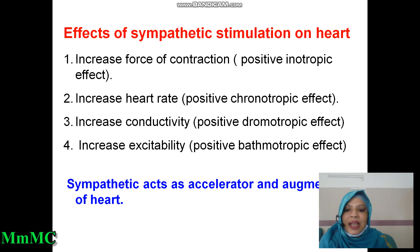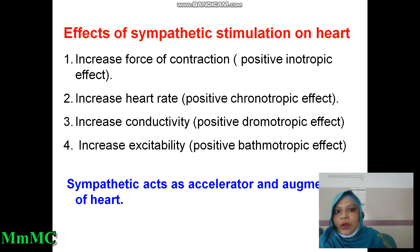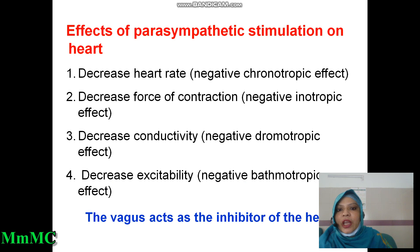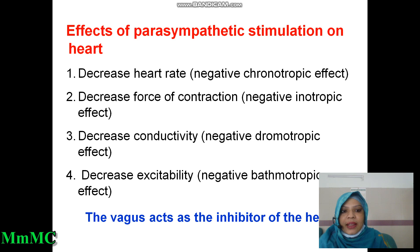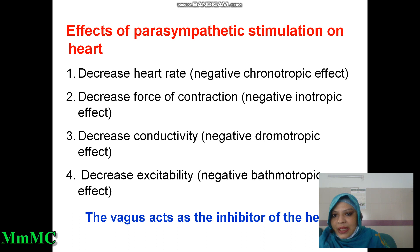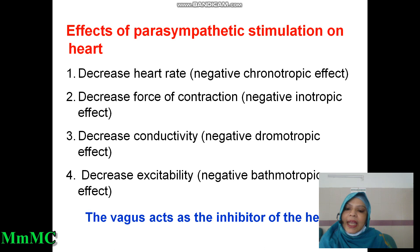Sympathetic nerves have a cardio-accelerator and augmentation effect on the heart. The effects of parasympathetic stimulation, acting through the vagus nerve and releasing acetylcholine, include: negative chronotropic effect — decreased heart rate; negative ionotropic effect — decreased force of contraction; negative dromotropic effect — decreased conductivity; and negative bathmotropic effect — decreased excitability. The vagus nerve has a cardioinhibitory effect on the heart.